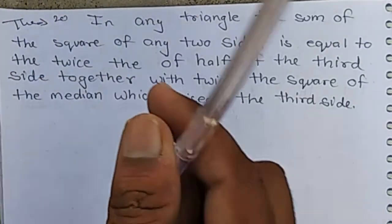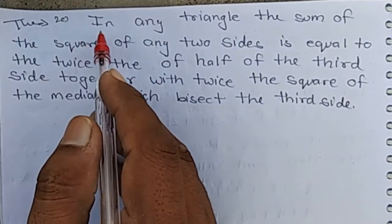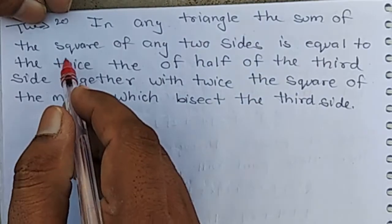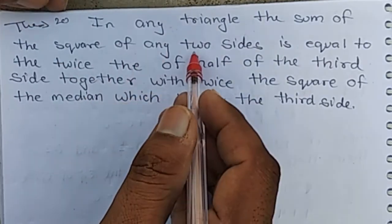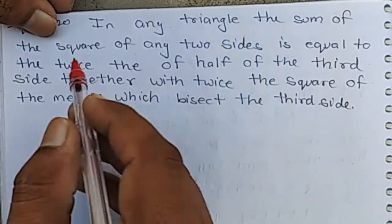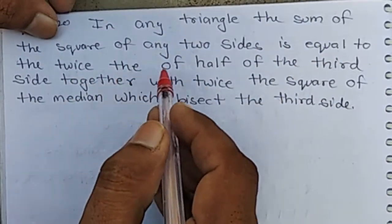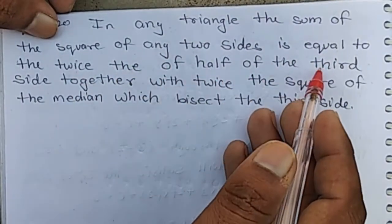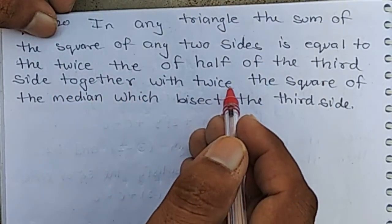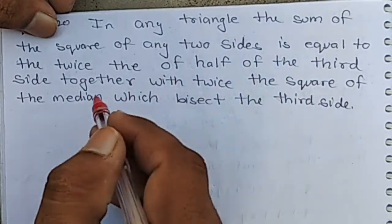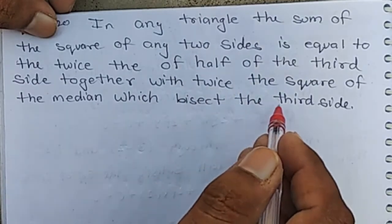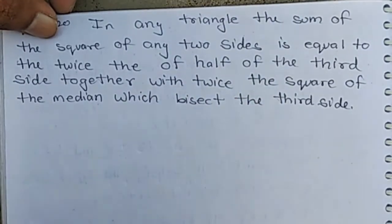Good morning class. It is theorem number 20. In any triangle, the sum of the squares of any two sides is equal to twice the square of the median which bisects the third side, together with twice the square of half of the third side.